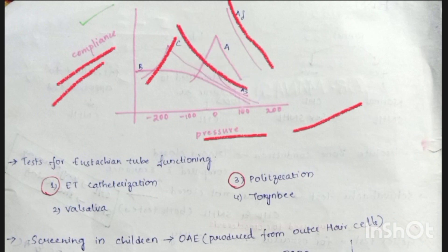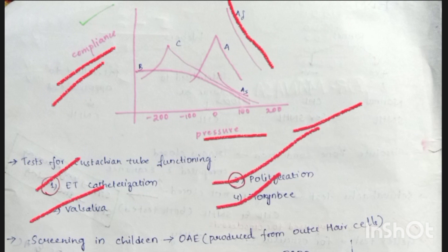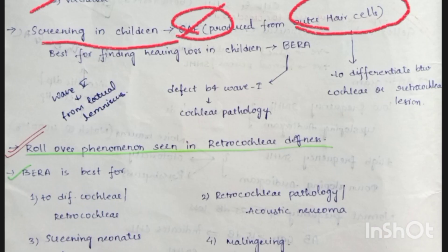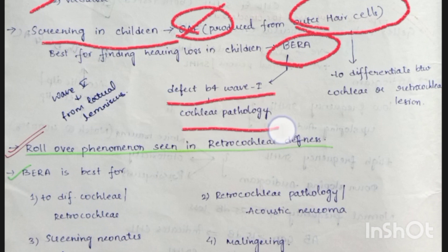Tests for Eustachian tube functioning include ET catheterization, Valsalva, politzerization, and Toynbee's test. Screening in children is done by otoacoustic emission (OAE), which is produced from the outer hair cells. The best test for finding hearing loss in children is BERA. A defective wave before wave 1 indicates cochlear pathology; wave 5 is from the lateral lemniscus.